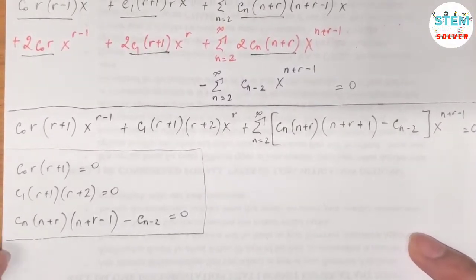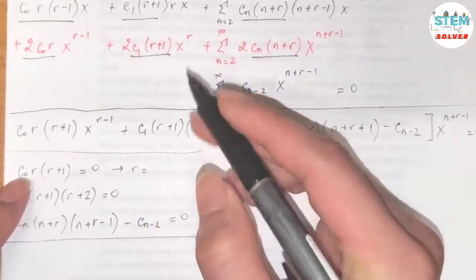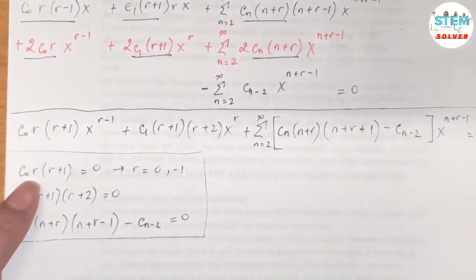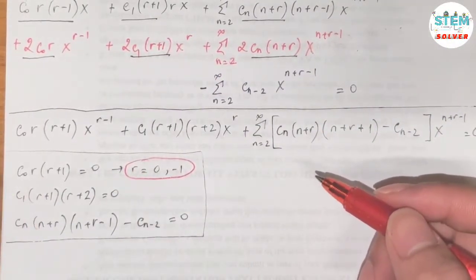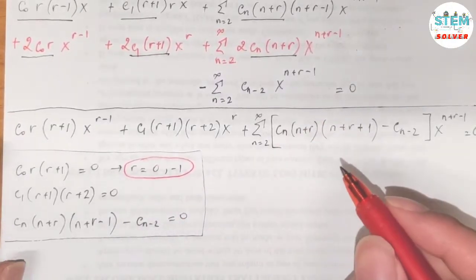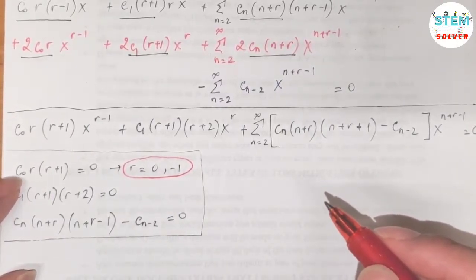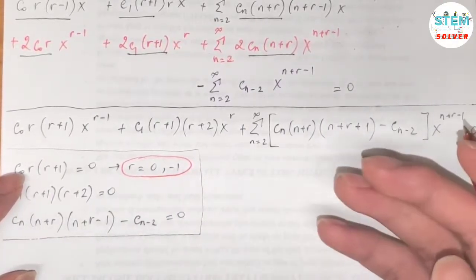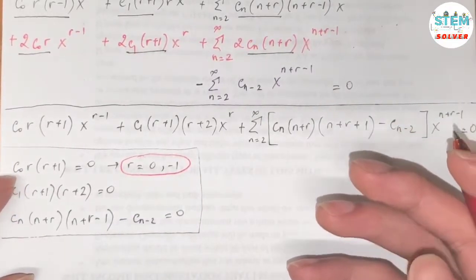Solve the first equation for r. We get r equals 0 or r equals negative 1 — these are the indicial roots. We solve for r, not c_0, because c_0 must be nonzero; otherwise y would be identically zero, which is trivial and useless.